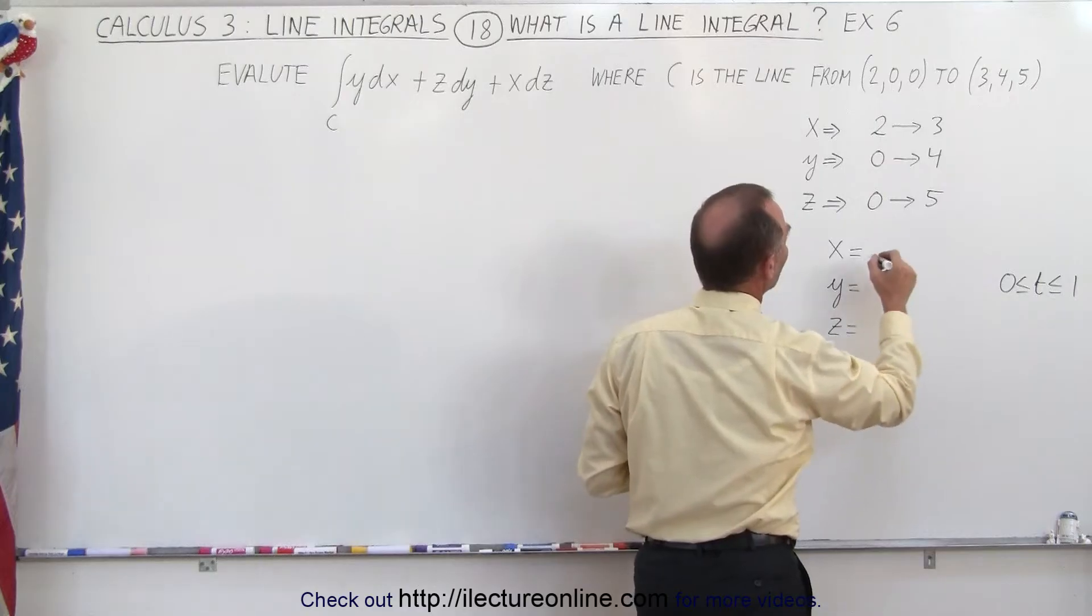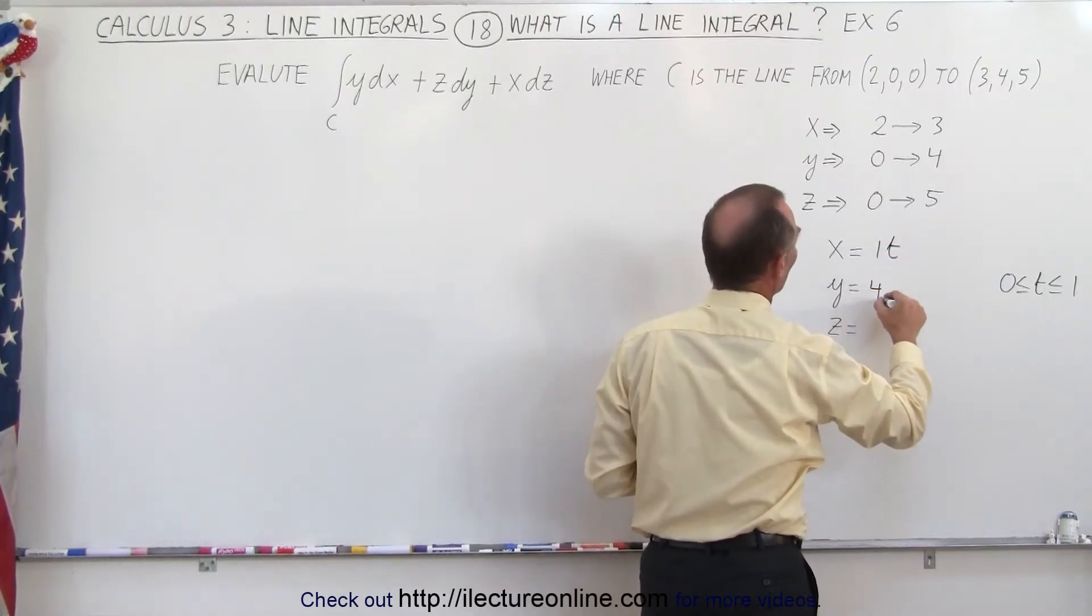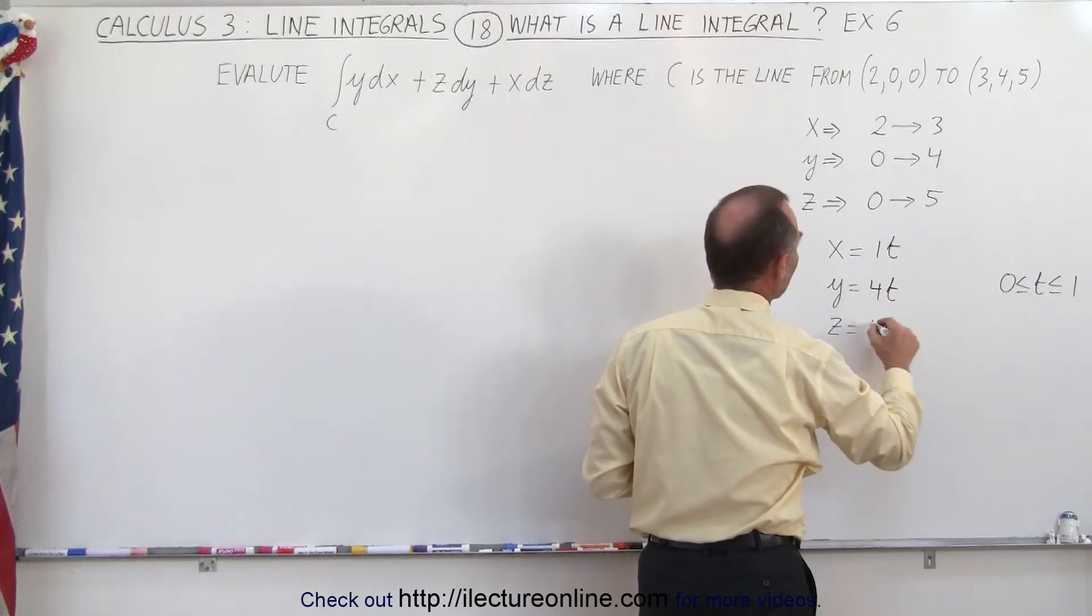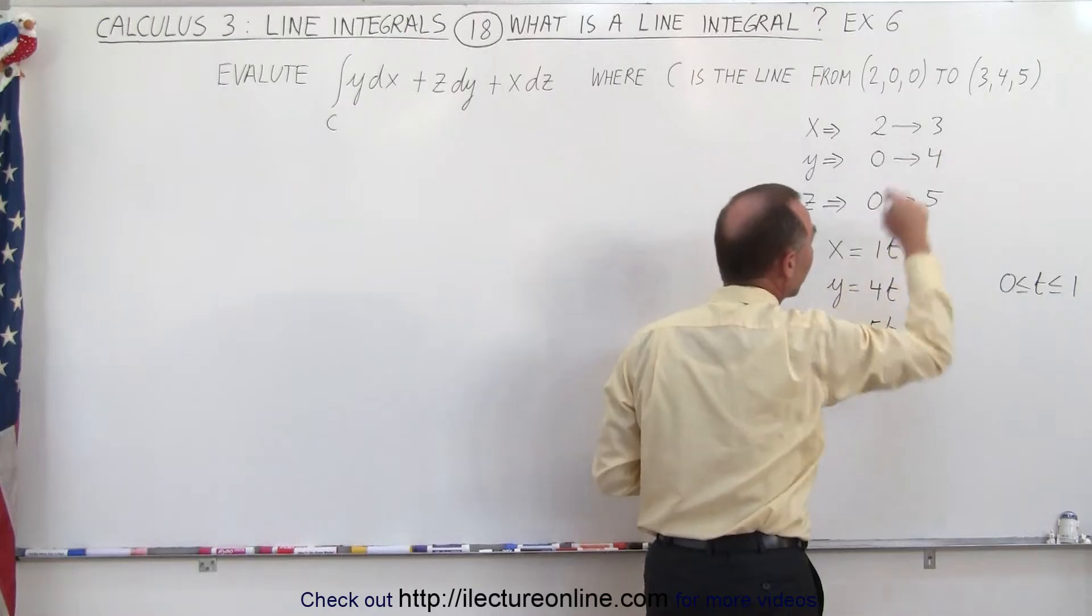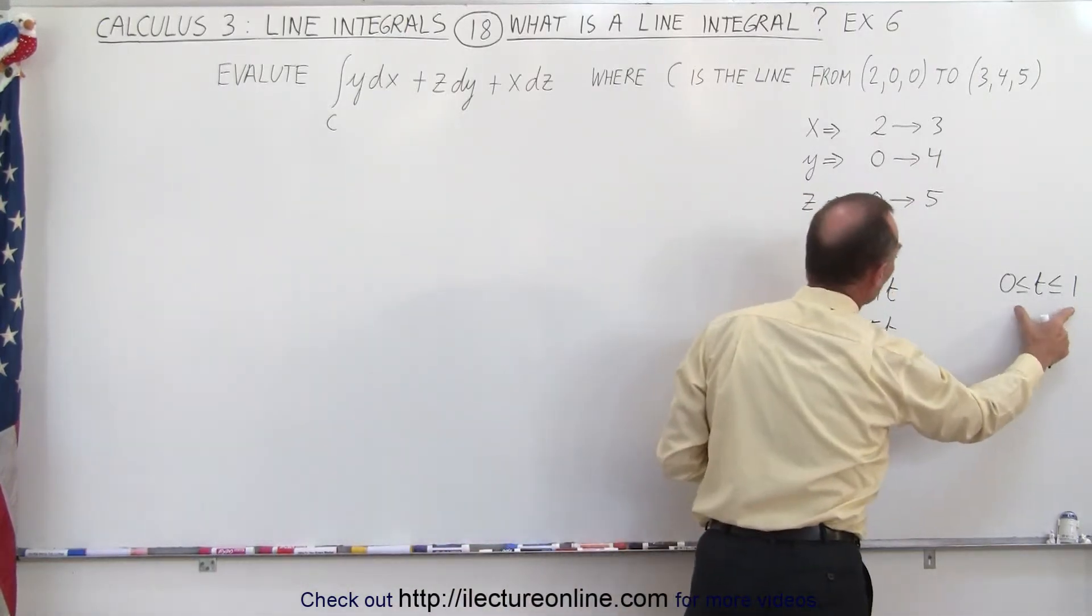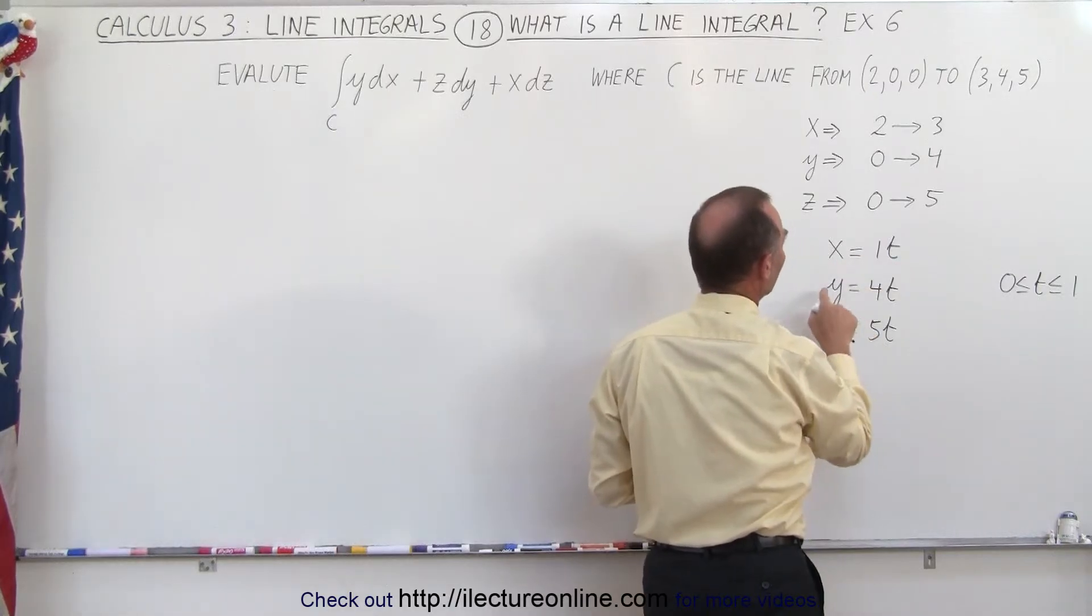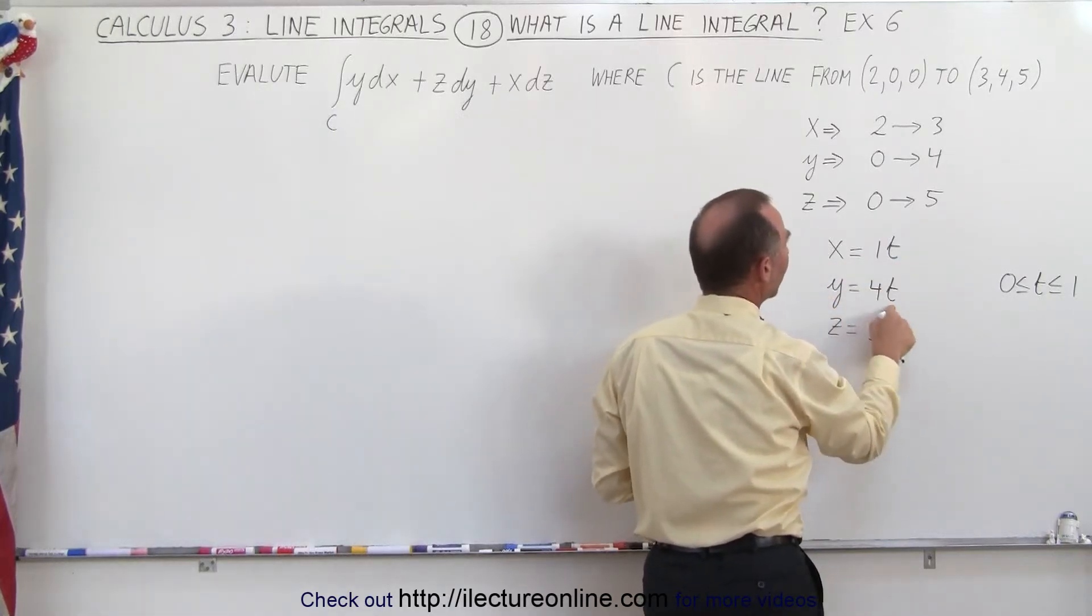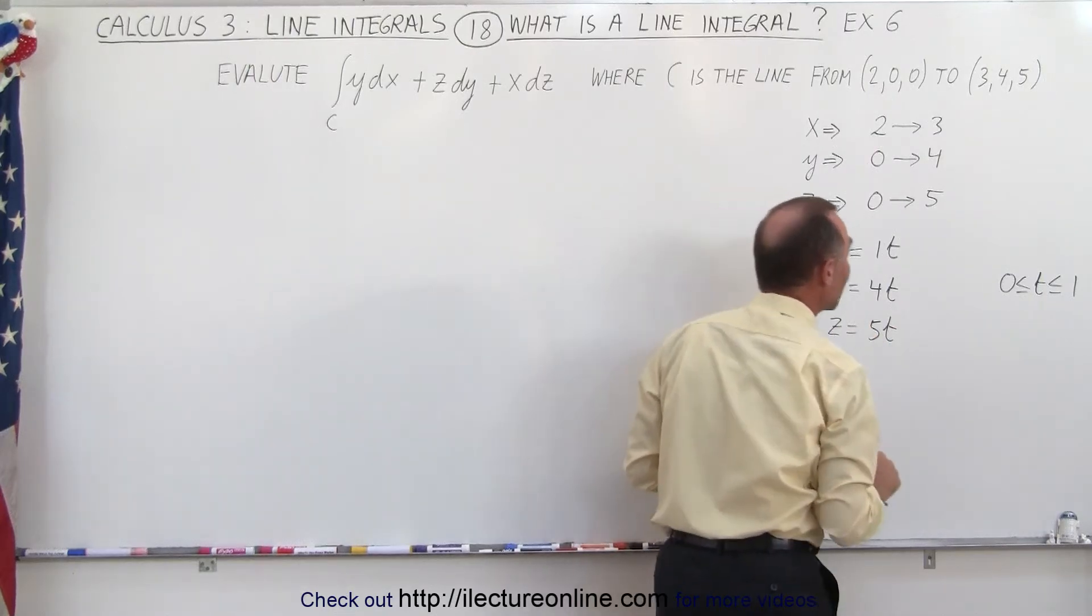So in this case, I would say x is going to be 1t, y is going to be 4t, and z is going to be 5t, all positive because they changed to a bigger number. And we want t only to change by 1, which means that since x changes by 1, it's 1 times t. Since y changes by 4, it's 4 times t, and since z changes by 5, it's 5 times t.